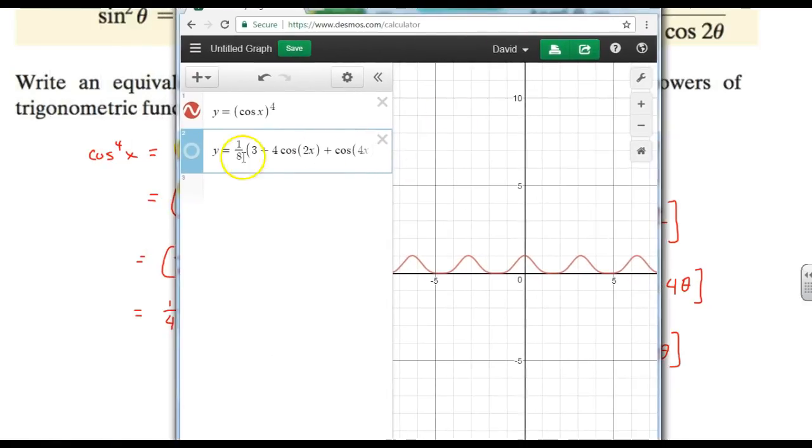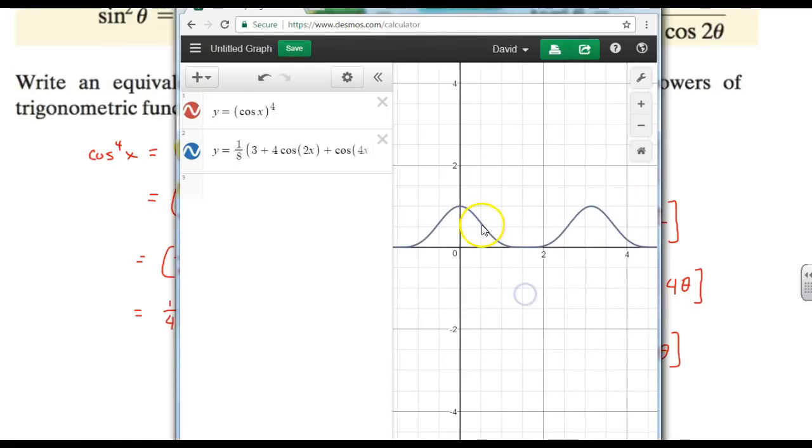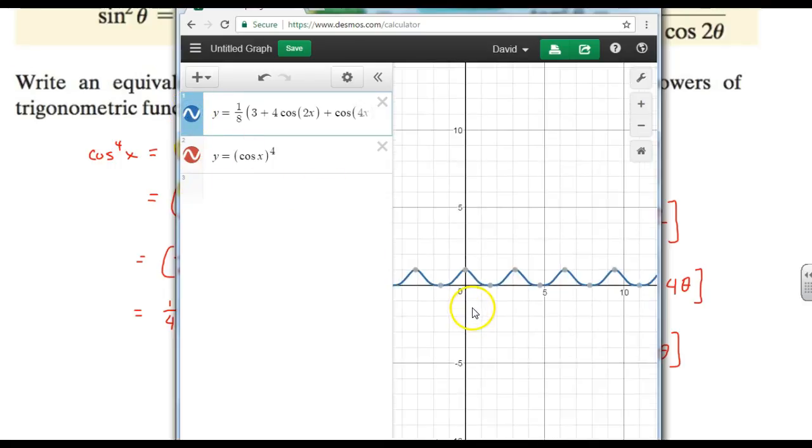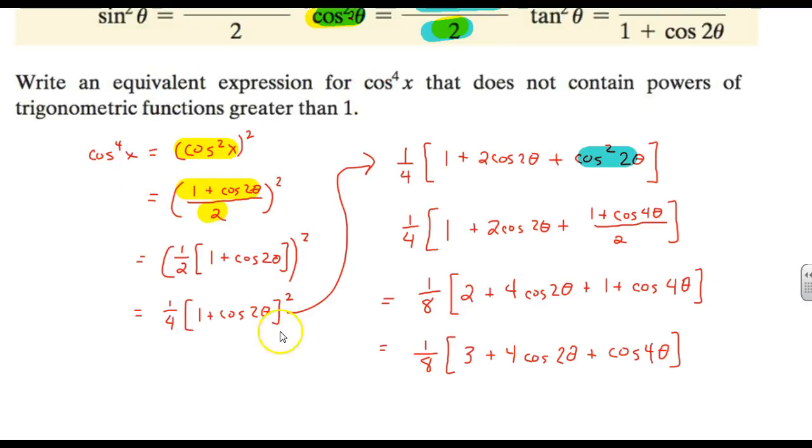But anyway, notice that when I turn this graph on, all the points that are on one of these graphs is the same as the points on the other graph. Let me move that back up to the top. So they are equivalent. They're the same thing. I see the same graph. If I zoom out, it's the same graph forever and ever and ever. So that's one way you can check what it does most, that they are the same.